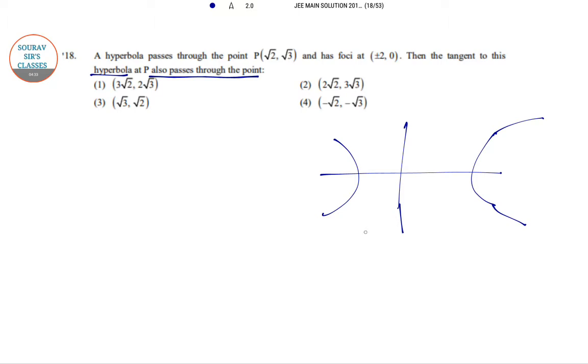If we draw this as 0, this is f dash, this is f. This is 2 comma 0, minus 2 comma 0. This is y axis, and this is p at root 2 comma root 3.